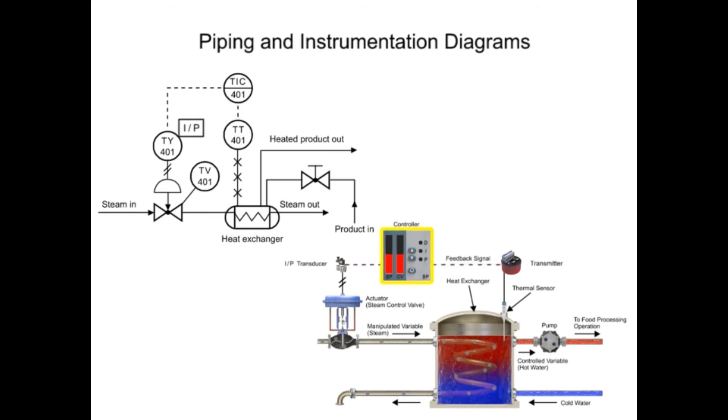The controller and indicator is the instrument where the transmitter sends an electrical signal and is shown in the functional identifier at the second and third letters, I and C. Balloons with a solid dividing line indicate that the instrument is board mounted.